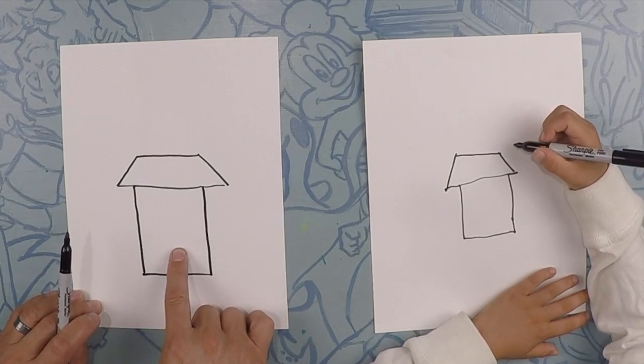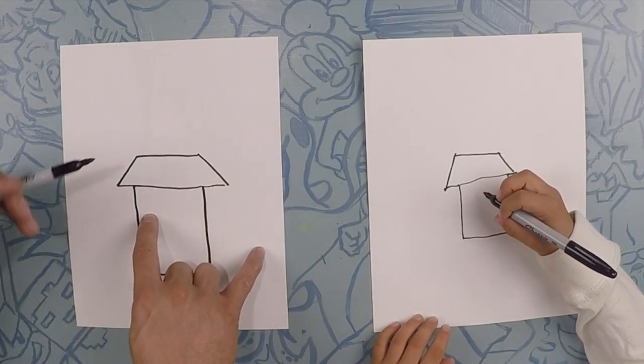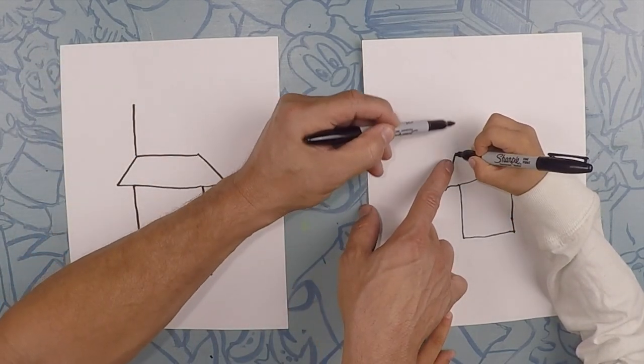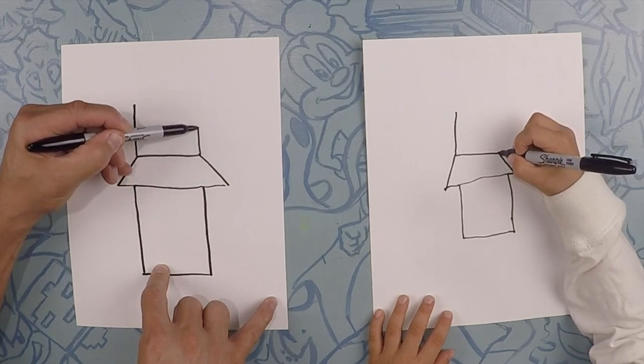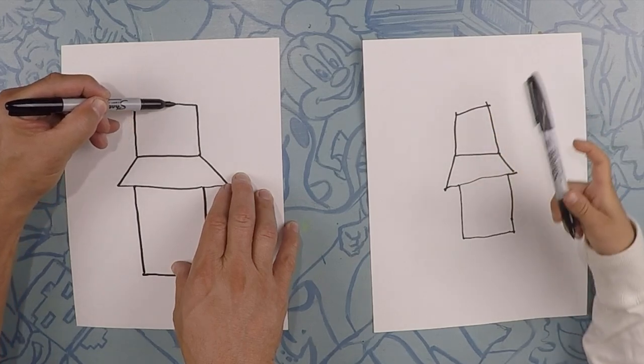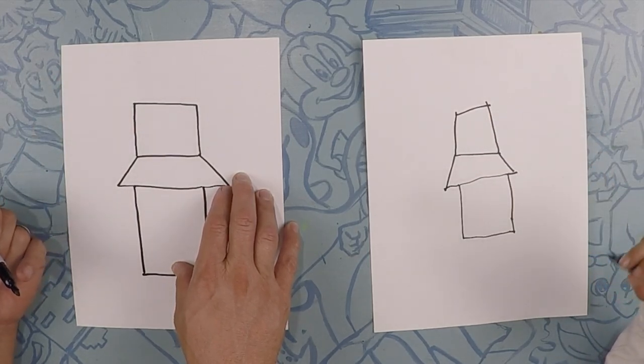So what we're going to do next, we're going to draw a square just like this on top. So let's extend these lines up. So we're doing the same thing? So from here, just extend it up. One, two. Perfect. And now close it off. Like that? Is that fine? That looks perfect.